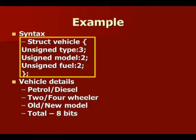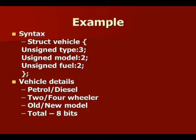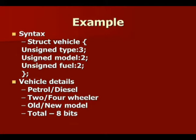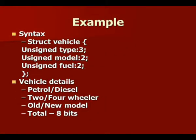Here is the syntax. You have structure vehicle, where vehicle is a tag. You have unsigned type, unsigned model, unsigned fuel, each followed by a colon and then a non-negative integer. What this indicates is that the field 'type' can hold a maximum of 3 bits, 'model' requires only 2 bits, and 'fuel' requires only 2 bits.